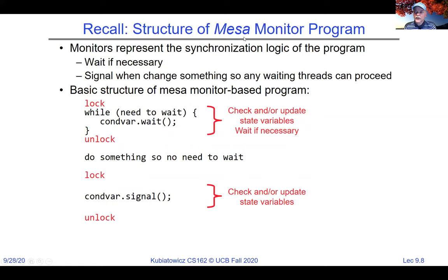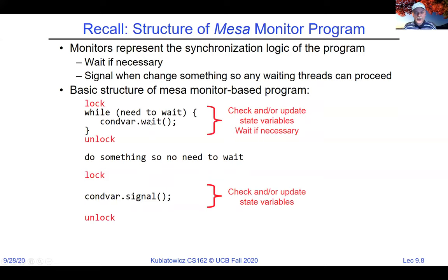Notice the looping construct — that's because of MESA semantics. Whenever we go to sleep it's because conditions were wrong, and when we wake up we check our condition again. The way to think about this: we have the lock through the whole loop — even when sleeping, think of it that way. Under the covers the lock gets released and reacquired. Because I have the lock, nobody can mess things up while I'm looking at shared variables. When I go to sleep, I'm letting somebody else fix the conditions, and when I wake up I have the lock again.